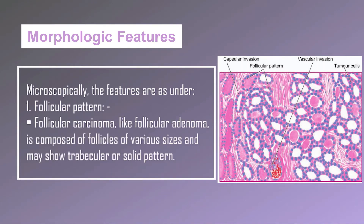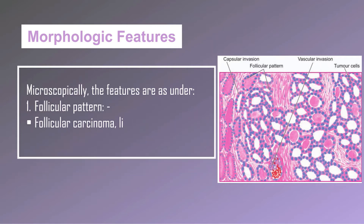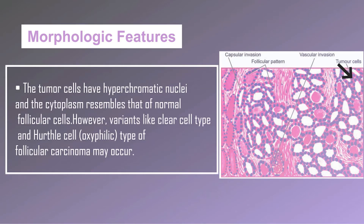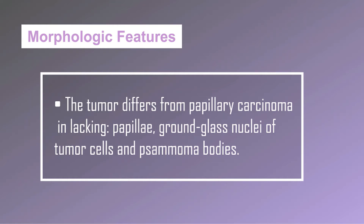Microscopically, follicular carcinoma, like follicular adenoma, is composed of follicles of various sizes and may show a trabecular or solid pattern. The tumor cells have hyperchromatic nuclei and the cytoplasm resembles that of normal follicular cells; however, variants like clear cell type and Hürthle cell oxyphilic type may occur. The tumor differs from papillary carcinoma in lacking papillae, ground-glass nuclei of tumor cells, and psammoma bodies.